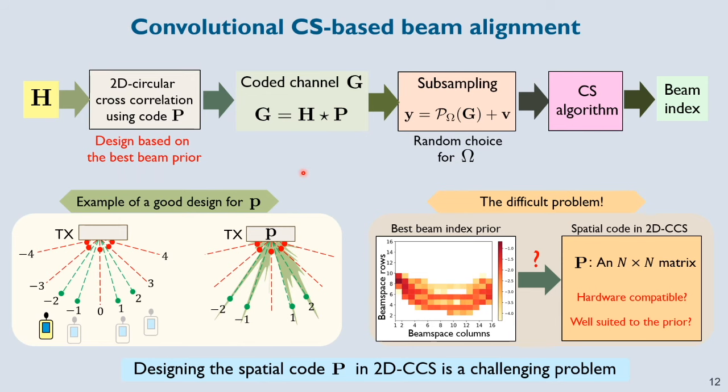Beam alignment using the 2D CCS pipeline is shown here. This pipeline basically has two stages. The first stage compresses the channel H using a spatial code P followed by subsampling and the second stage estimates the best beam from the subsampled version. In this case, the subsampling coordinates are nothing but the set of 2D circulant shifts that are used by the transmitter.